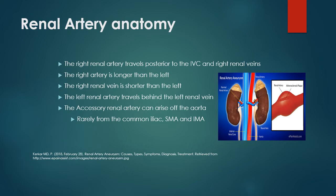The anatomy of the renal artery. The right renal artery travels posterior to the IVC and right renal veins. The right artery is longer than the left. The right renal vein is shorter than the left. The left renal artery travels behind the left renal vein. The accessory renal artery can arise off the aorta, and I've seen a couple of accessory renal arteries coming off the aorta.